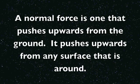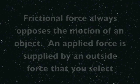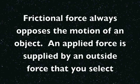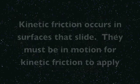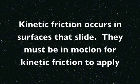There are a few different forces that are common to see. The first is gravity, also known as m times g. A normal force is one that pushes upward from the ground — it pushes upward from any surface that is around. Frictional force always opposes the motion of an object. An applied force is supplied by an outside source that you select. If you have force in a string, cable, or rope, it's called tension.